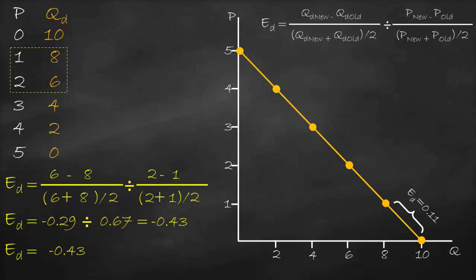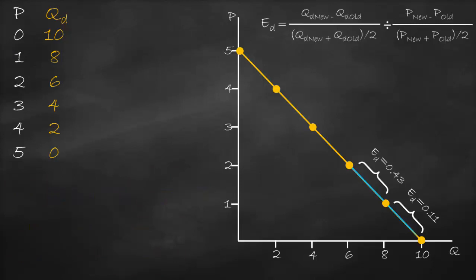We have a negative sign due to the negative relationship between price and quantity demanded based on the law of demand. Using absolute value gives us 0.43, which is less than 1 — therefore it is inelastic. From price 0 to 2 on the graph, demand is inelastic, shown in blue. At lower prices, the product is relatively inelastic.